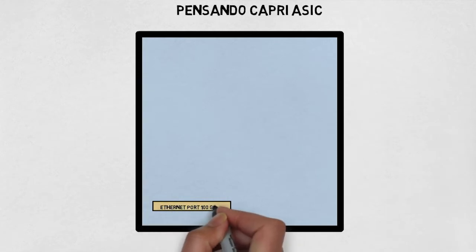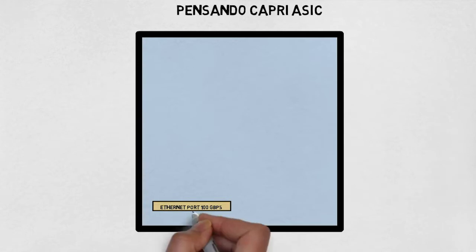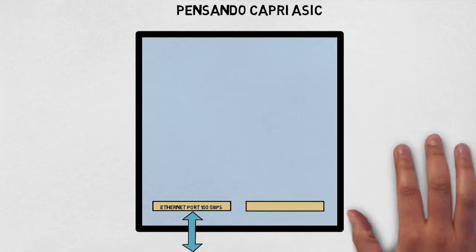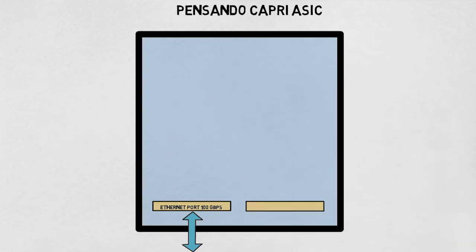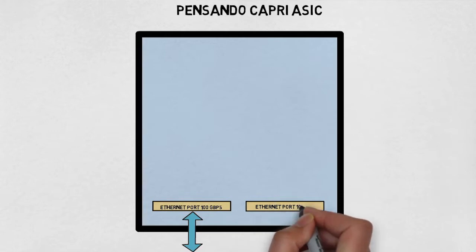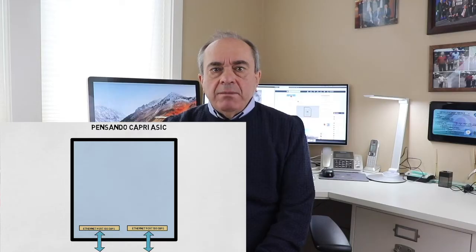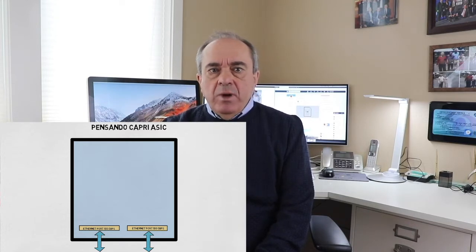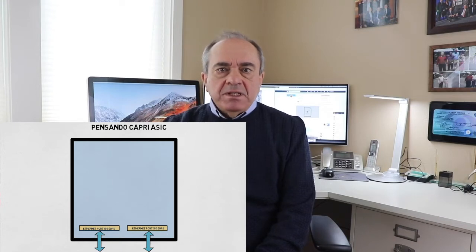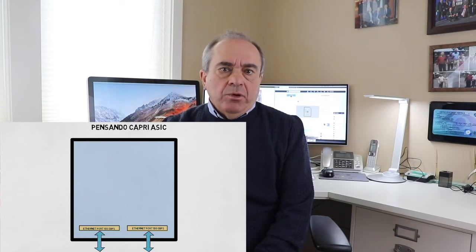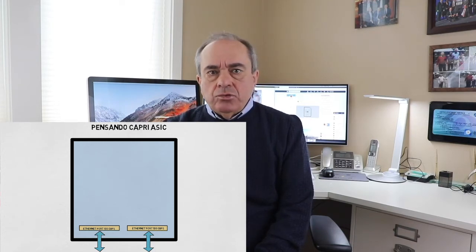Let's start discussing the primary interfaces. The Capri ESIC has two Ethernet ports. These Ethernet ports are 100 Gigabit per second and can be subdivided into 50 Gigabit, 40 Gigabit, 25 Gigabit and 10 Gigabit. There are two of those because we want to be able to pass packets from one Ethernet port to the other, in addition to moving packets from one Ethernet port to a PCI interface. Another possibility is to use the two Ethernet ports to connect to two top-of-rack switches.